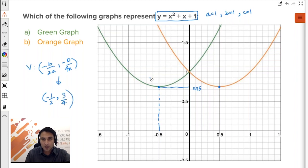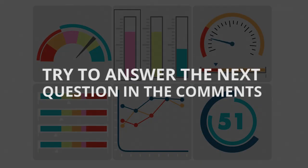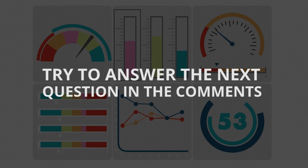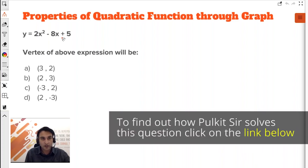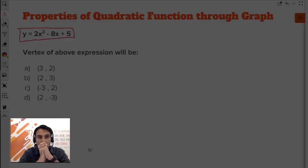So the vertex is minus half comma three by four. Hence, green one is the correct option. Can you tell me the vertex of this and can you also plot this graph? Note it.